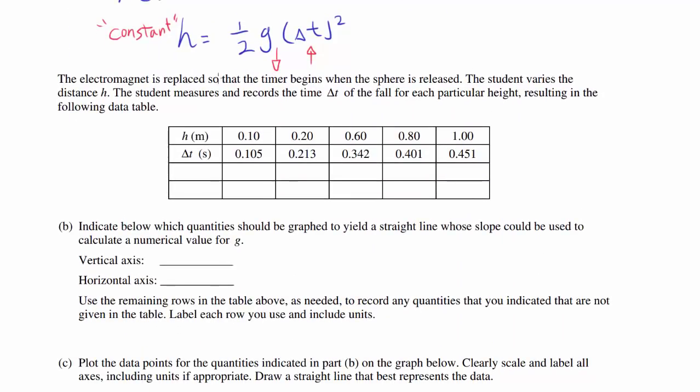The electromagnet is replaced so that the timer begins when the sphere is released. The student varies the distance H and records the time of fall for each height, resulting in a data table. We need to indicate which quantities should be graphed to yield a straight line whose slope could be used to calculate the numerical value for g.